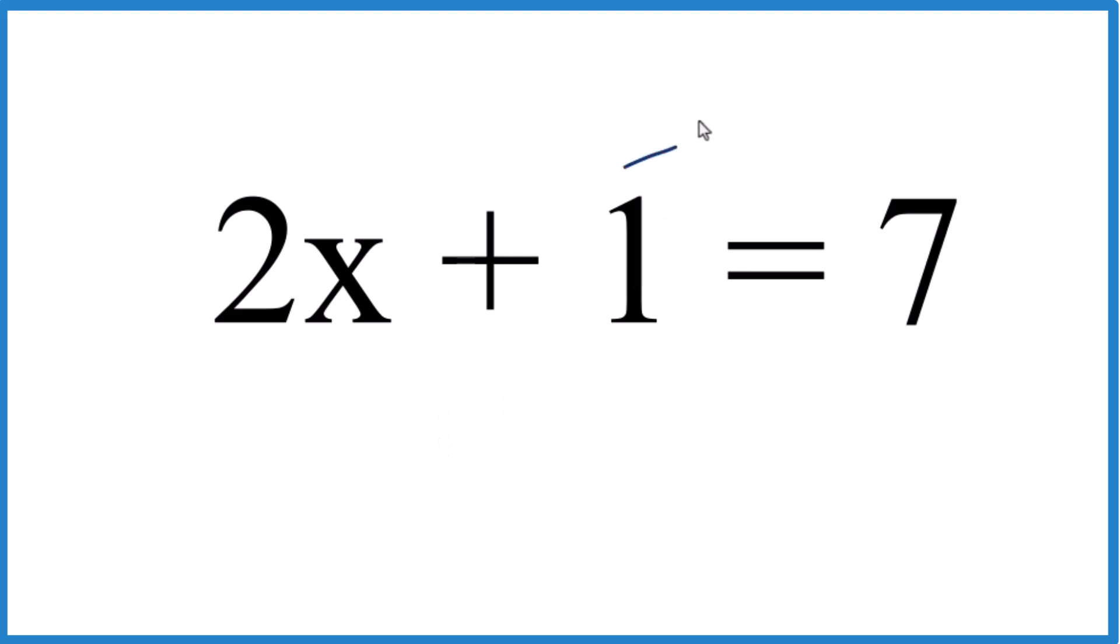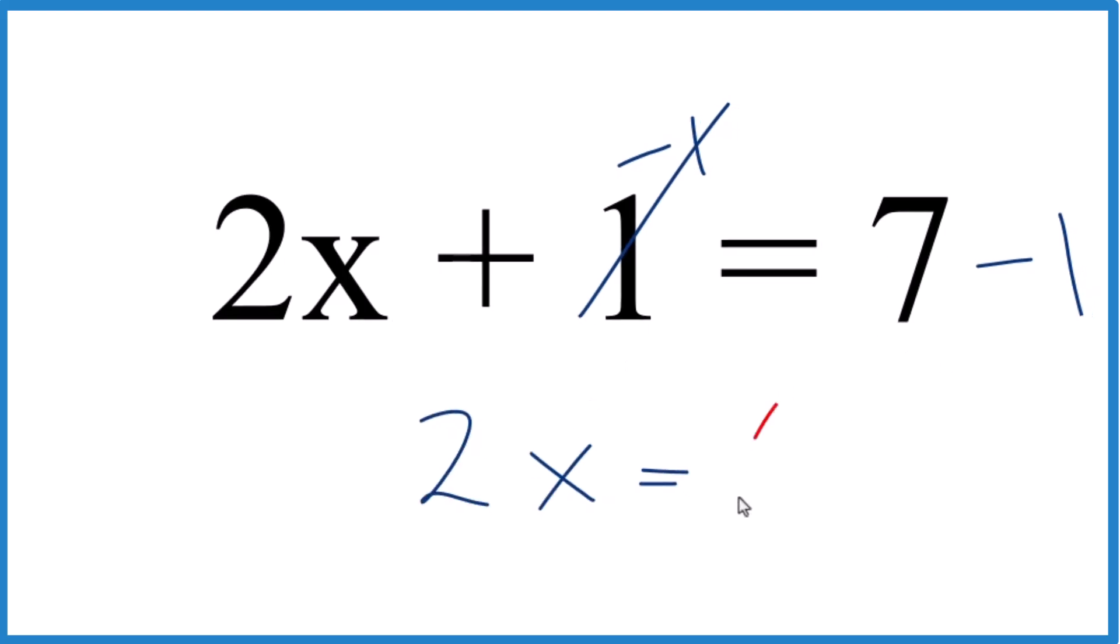We could subtract 1 from each side. 1 minus 1 is 0, so that's gone. And we would have 2x equals 7 minus 1. 2x equals 6.